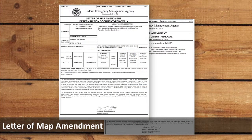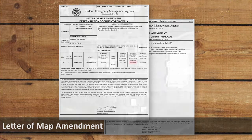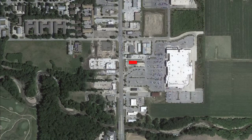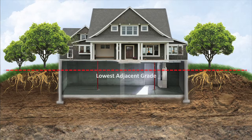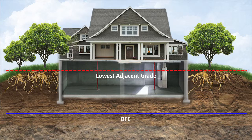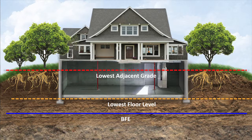A Letter of Map Amendment, or LOMA, can be used to remove a single parcel or building from the Special Flood Hazard Area. For buildings constructed before the publication of the first FEMA flood map that identified the structure as being in the Special Flood Hazard Area, the property owner must show that the lowest ground elevation where it touches the foundation on the outside of the building — what FEMA refers to as the lowest adjacent grade — is above the base flood elevation. For structures built after the site was first designated as the Special Flood Hazard Area, it must be shown that the lowest adjacent grade and the lowest floor, including basement, is above the base flood elevation.